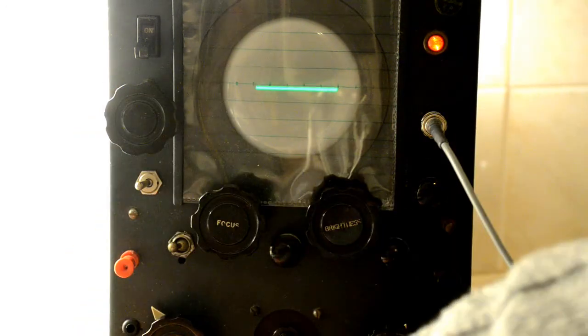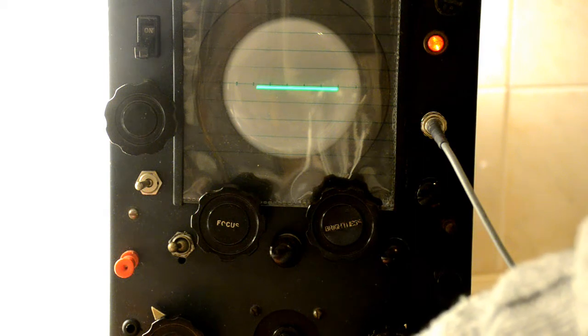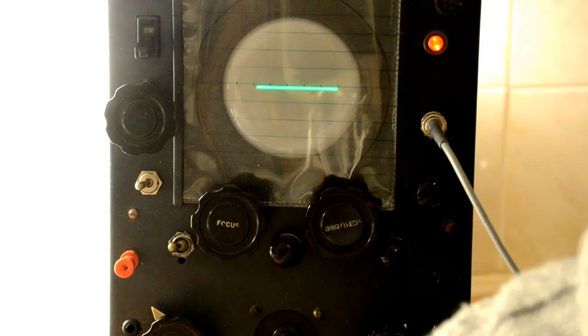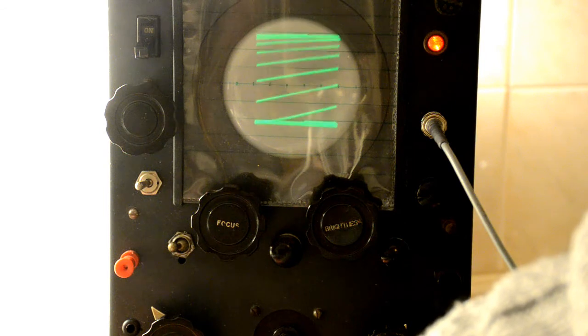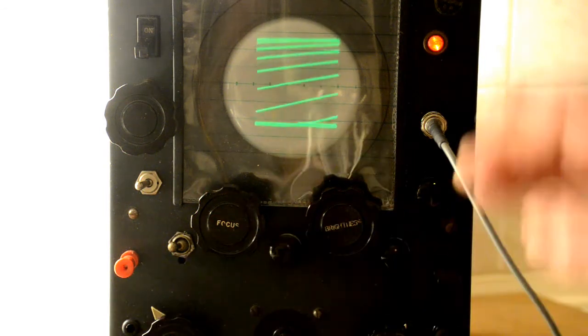So if we now turn the bias down, which means the voltage goes up on the grid, now we can see it's burst into life. However,